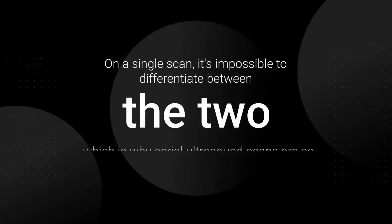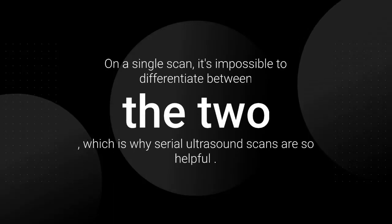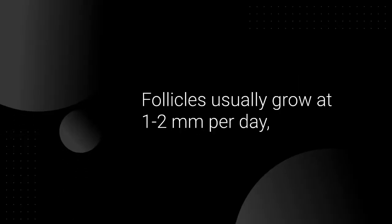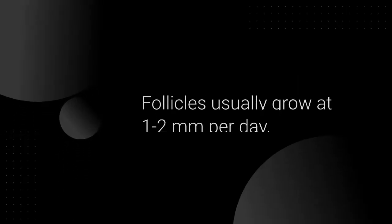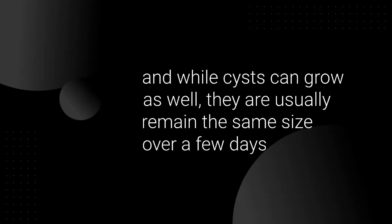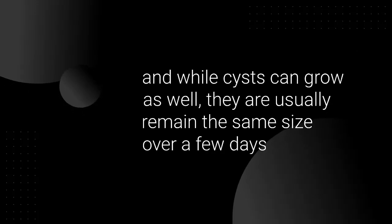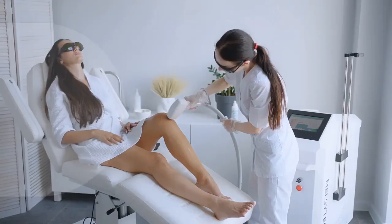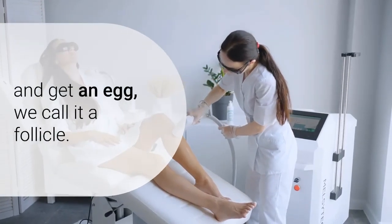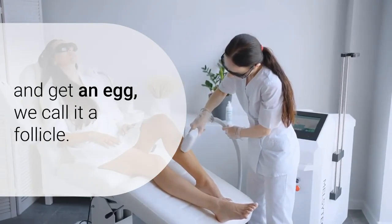On a single scan, it's impossible to differentiate between the two, which is why serial ultrasound scans are so helpful. Follicles usually grow at 1–2 mm per day, and while cysts can grow as well, they usually remain the same size over a few days.